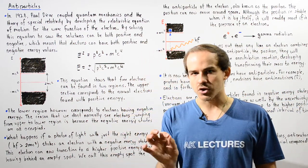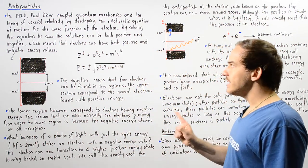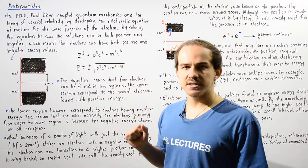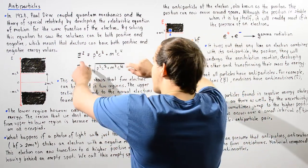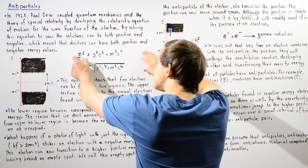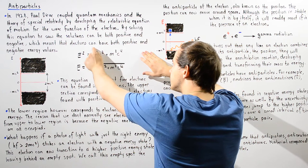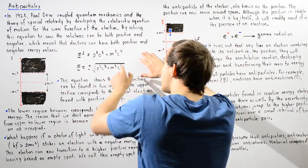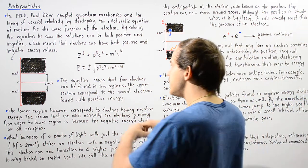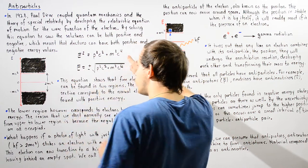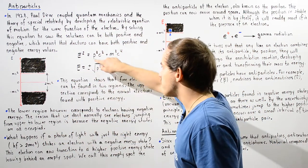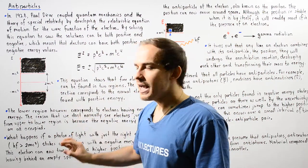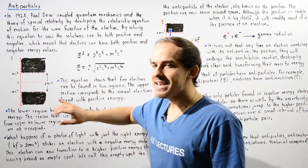What that meant is the following: electrons cannot only have a positive energy, they can also have a negative energy value. If we recall the relationship between relativistic energy and relativistic momentum, the relativistic energy squared equals the relativistic momentum squared multiplied by c squared, plus m squared multiplied by c to the fourth, where c is the speed of light and m is the mass of the particle. Solving for energy gives the positive or negative square root of this entire quantity, meaning the energy of an electron can also take negative values.